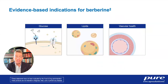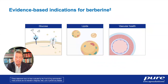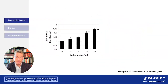The top three evidence-based cardiometabolic indications are: supporting glucose responses, lipid profile, and vascular health. These three areas pretty much sum up metabolic and cardiometabolic health, which affects a very large percentage of the U.S. population.